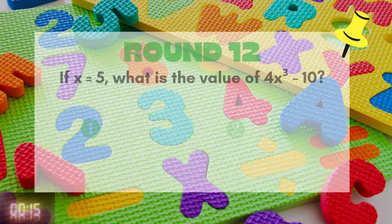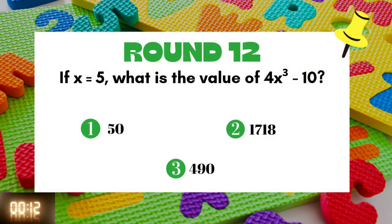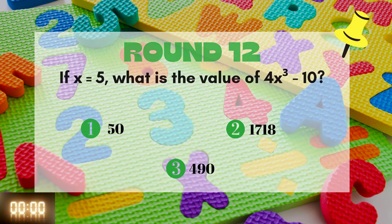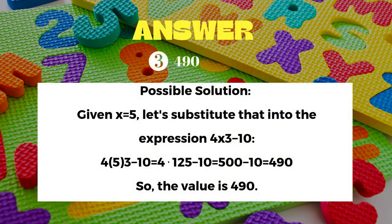Round 12: If x equals 5, what is the value of 4x raised to power 3 minus 10? The answer is 490.